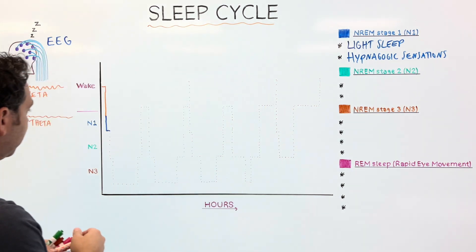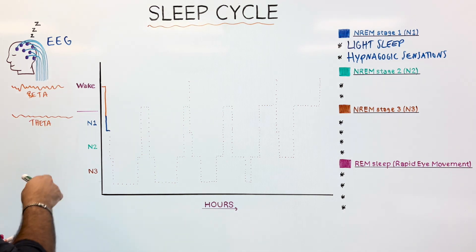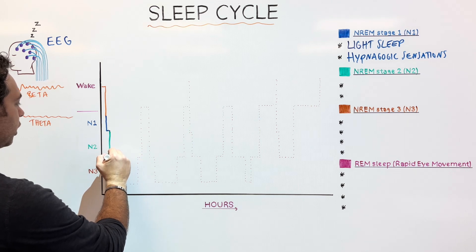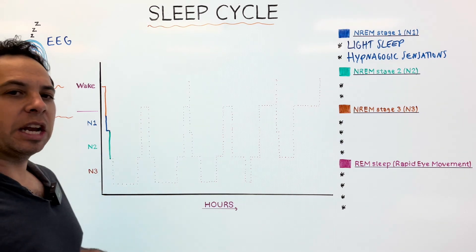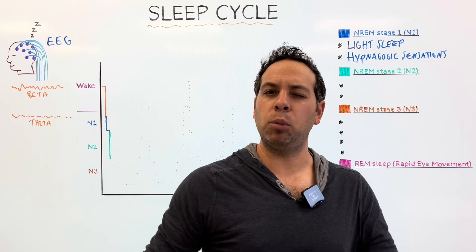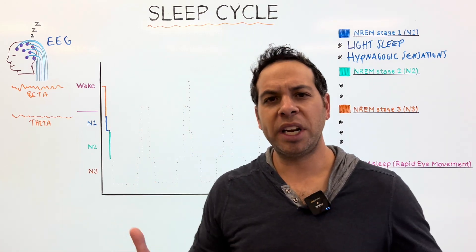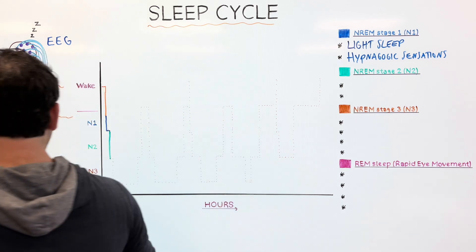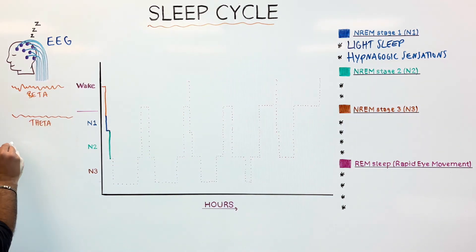After about 10 to 15 more minutes, what's gonna happen? You're gonna drift off, as we call stage two. Now, I'm gonna use the phrases non-REM and REM. We'll understand that in a little bit. All we need to think about is stages in order. One, two, and three. On EEG, what I'm gonna see is also theta waves, but I'm gonna see interesting activity.